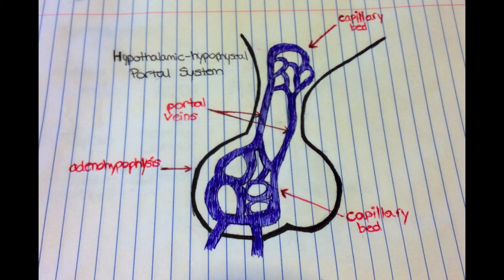As is shown in this drawing, there are two capillary beds — one in the hypothalamus, which is the top portion, and one in the anterior pituitary, or adenohypophysis, which is the bottom portion. They are connected by a common portal vein. The purpose of this system is that it allows hormones to bypass the systemic circulatory system and go directly from the hypothalamus to the anterior pituitary gland undiluted.